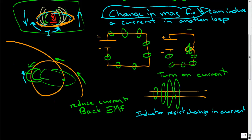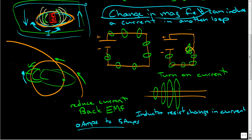Let's say we go from 0 amps to 5 amps — the only time the magnetic field line is changing is when the current is going from 0 to 5. After 5, nothing happens, just as if we had that magnet just sitting there. But when it's increasing or decreasing, we get these magnetic field lines that keep getting bigger and smaller, and that's when an induced current appears.